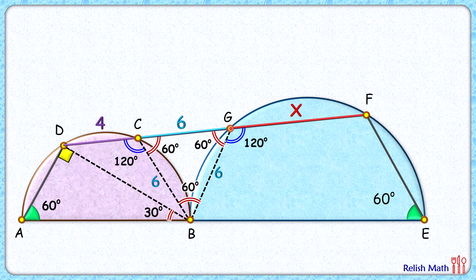Same logic, we'll join B, F here and BE is diameter. So this angle will be 90 degrees and this angle here will be 180 minus 60 minus 90 or 30 degrees. Now let's assume this angle is alpha degrees and this angle is beta degrees.